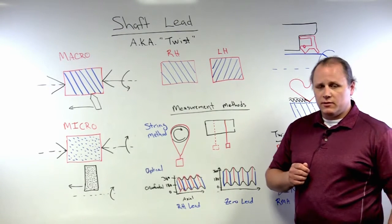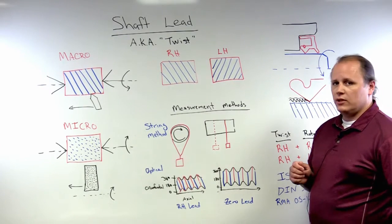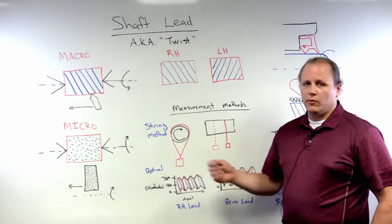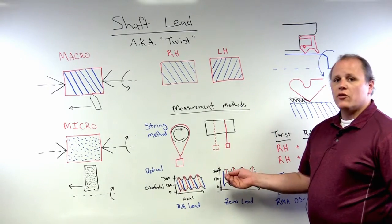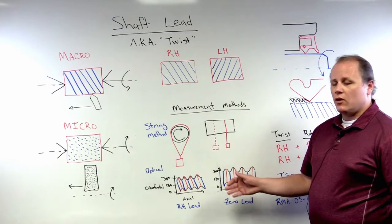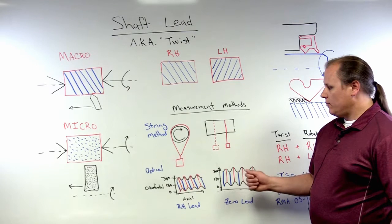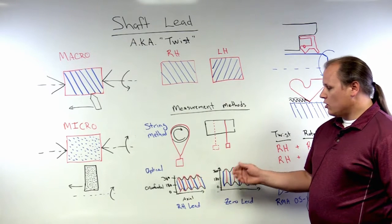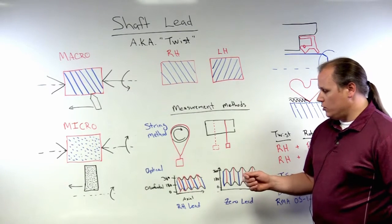A more precise and accurate method of measurement is using an optical method. In an optical method, you are creating a 3D mapping or 3D profiling of the entire surface of the shaft.